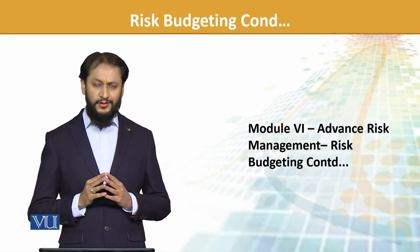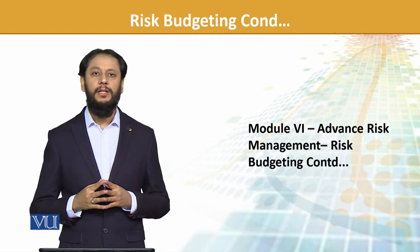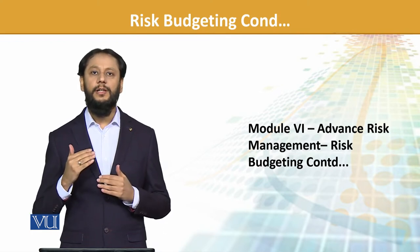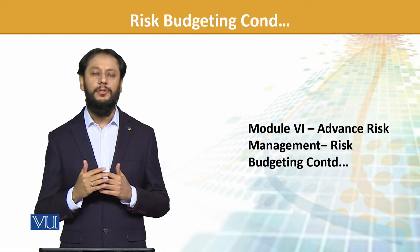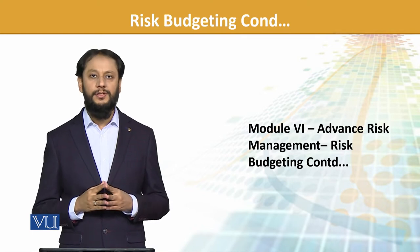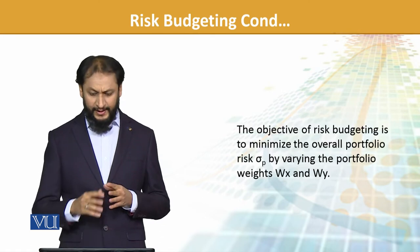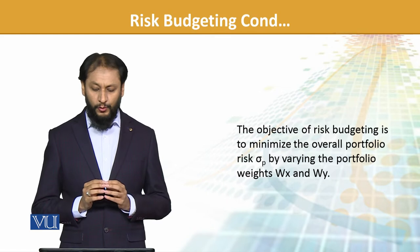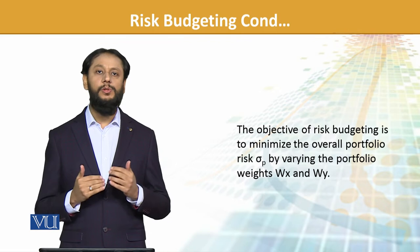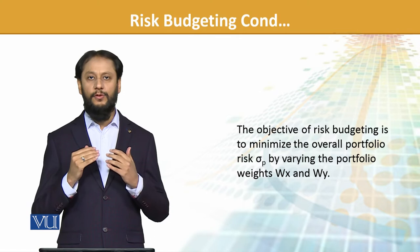Bismillahirrahmanirrahim. In advanced risk management, we started about risk budgeting — what is risk budgeting about and its aim, mainly in order to get the highest risk adjusted return through allocation. The objective of risk budgeting is to minimize the overall portfolio risk by varying the portfolio weights, using tools to adjust those weights so that overall portfolio risk is at the lowest level.